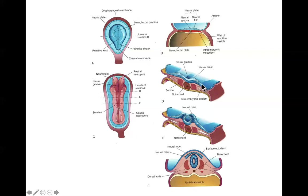This area differentiates into what is called surface ectoderm. The neural folds continue to proliferate and enlarge and get bigger, and they wrap around and zip together at the top until we have a nice neural tube with neural crest up above it and the surface ectoderm above those. As the neural tube fuses, it fuses from the center outward in both directions — starting in the center and fusing towards the caudal end and towards the cranial end.